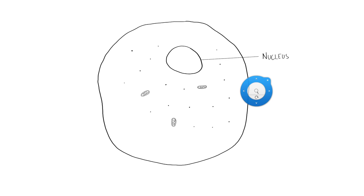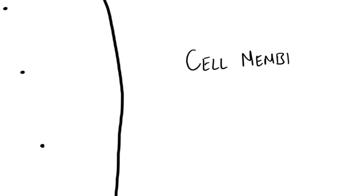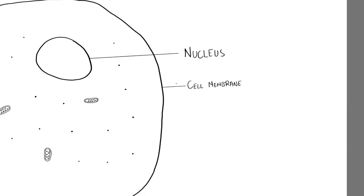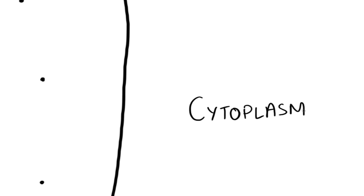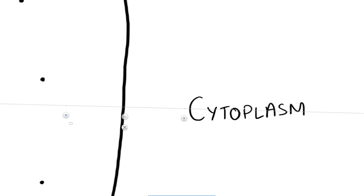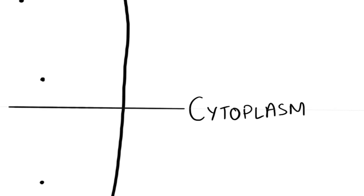Next we can do a label for the cell membrane. Connect that with the ruler. And the space within — inside of that cell — is the cytoplasm. That sort of jelly-like material where all of the chemical reactions take place. Connect it up. For the cytoplasm, anywhere within the cell would be fine. Just make sure it clearly goes into the cell and it's not connecting to any other structure.